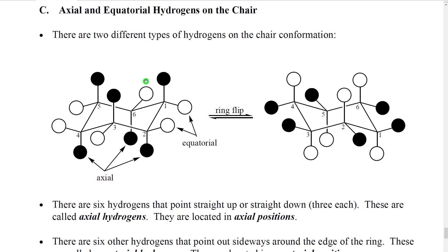In this picture, what I've done is I've made all of the groups that are pointing straight up or straight down, I've colored in their atoms black, whereas I've made all the groups that point around the side, I've colored in their atoms white. We call the groups that are straight up and down, axial groups. We call the groups that are pointing out sideways, equatorial groups.